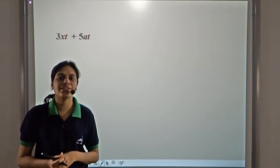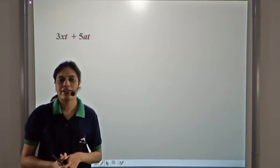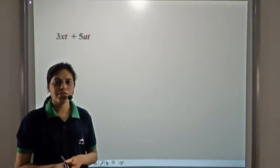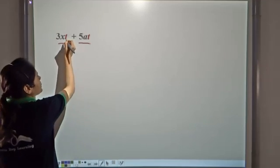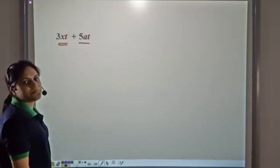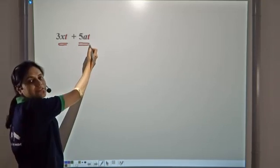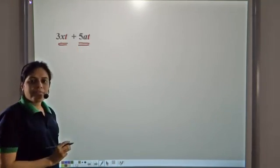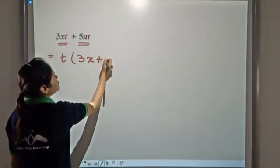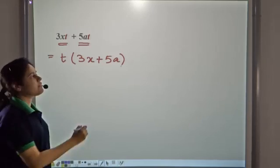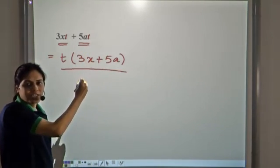We have learnt that factorization is the reverse of multiplication. When we factorize an expression, we write it in terms of the product of its factors. So if we have to factorize this expression, we need to find the common factor between the two terms. We see that t is being multiplied with 3x in one term and with 5a in the other. So t is a common factor, and we can write the remaining parts as 3x plus 5a. This is the factorized form of the expression.